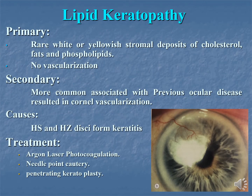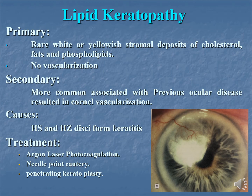Lipid keratopathy has two types: primary and secondary. Primary is rare — there are white or yellow stromal deposits of cholesterol, fats, and phospholipids with no vascularization. Secondary lipid keratopathy is more common and is associated with previous ocular disease; it results in corneal vascularization. Causes include herpes simplex and herpes zoster disciform keratitis. Treatment includes argon laser photocoagulation of the feeder vessels and needle-point cautery; for visual rehabilitation, penetrating keratoplasty is the answer.